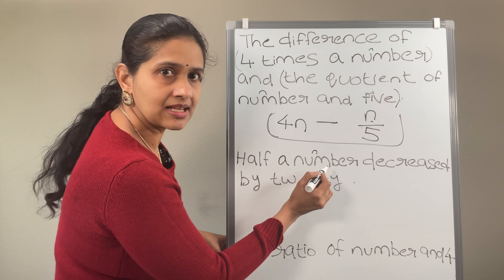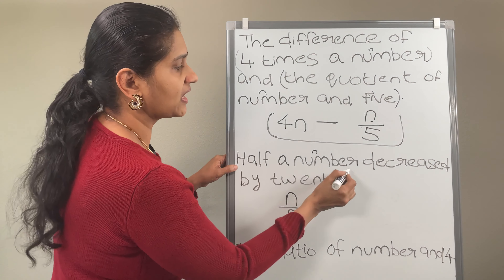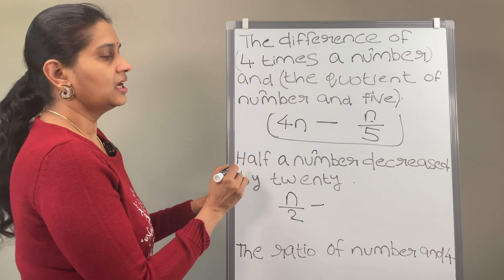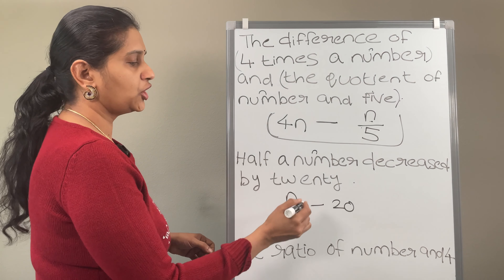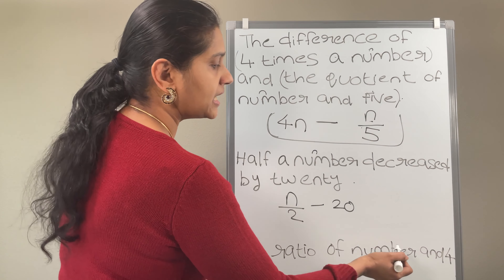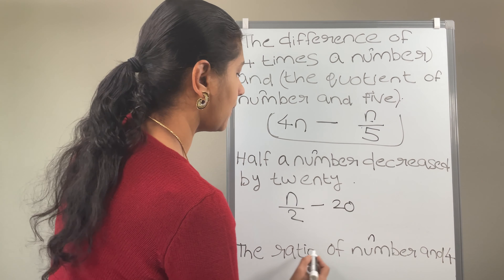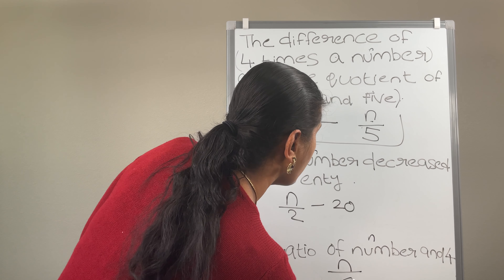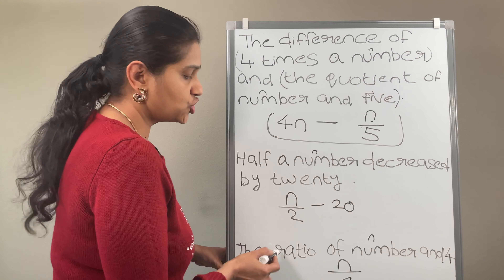Half a number — consider n as a number — half a number means n over 2. Half a number decreased means we are going to subtract by 20, which means minus 20. So n over 2 minus 20. Now the next is the ratio of a number and 4. Ratio means division. Consider n as a number. So the ratio of a number and 4 means n divided by 4.